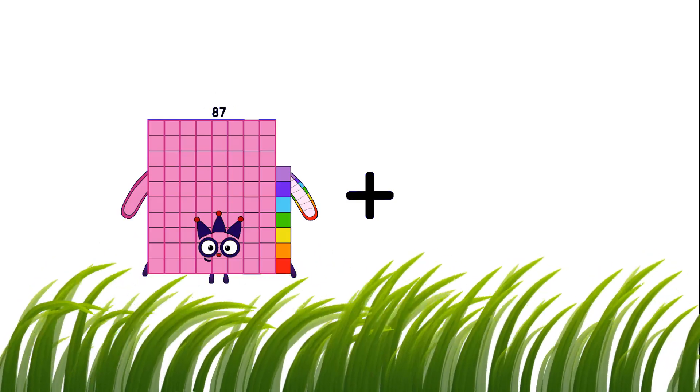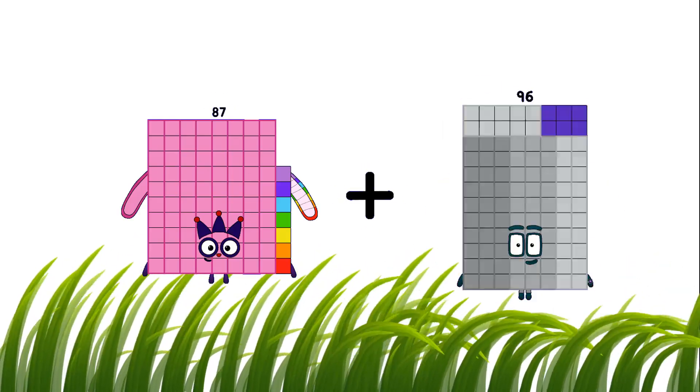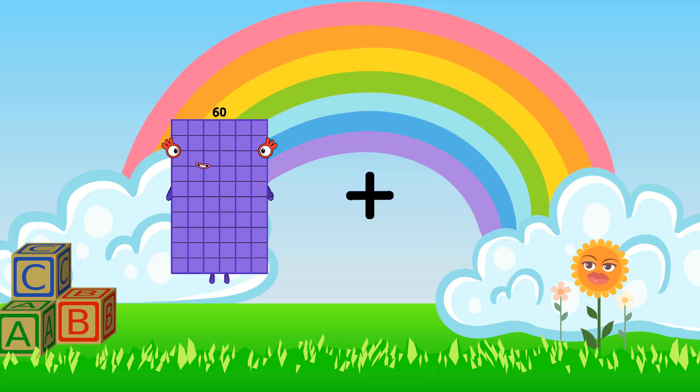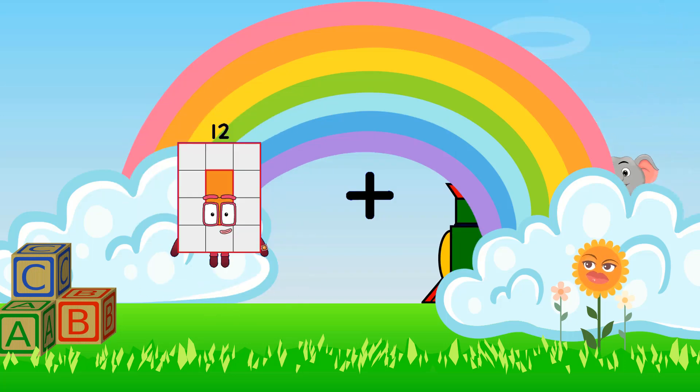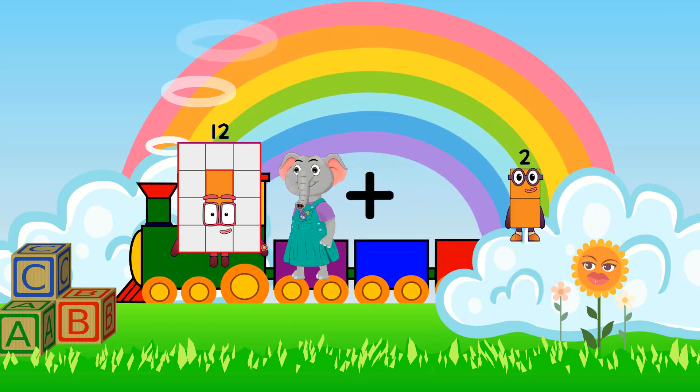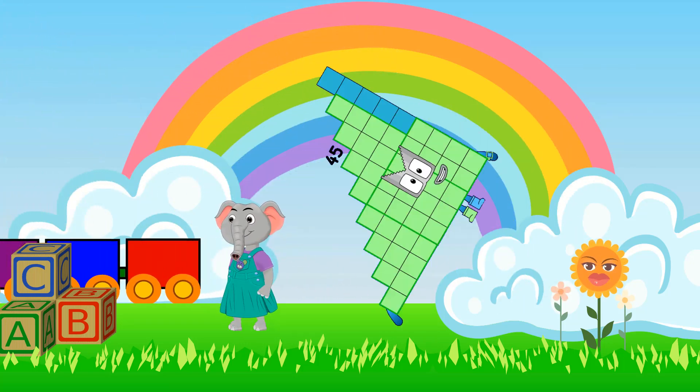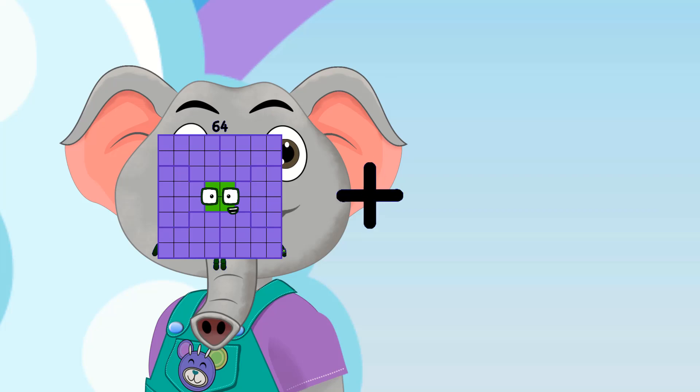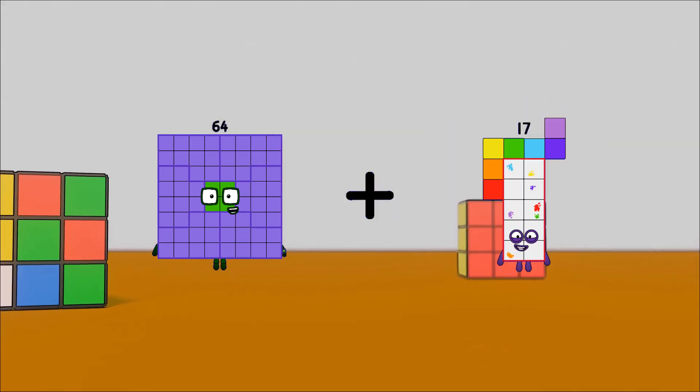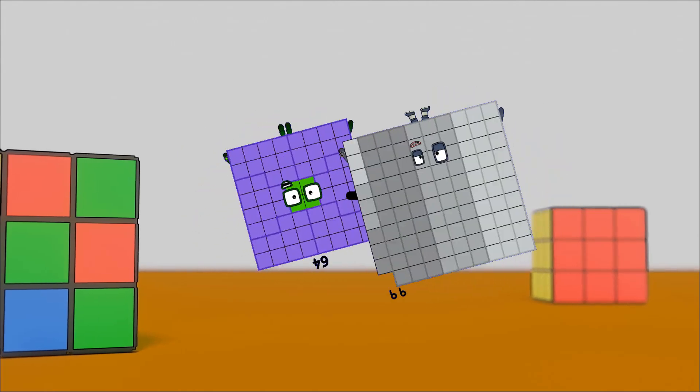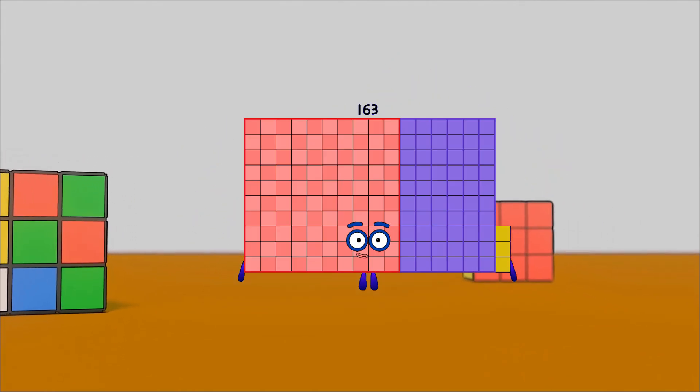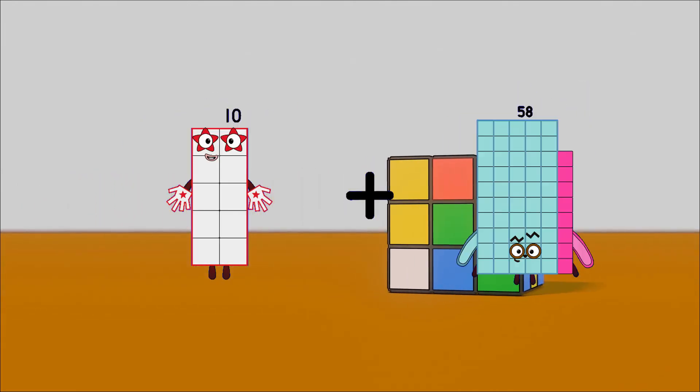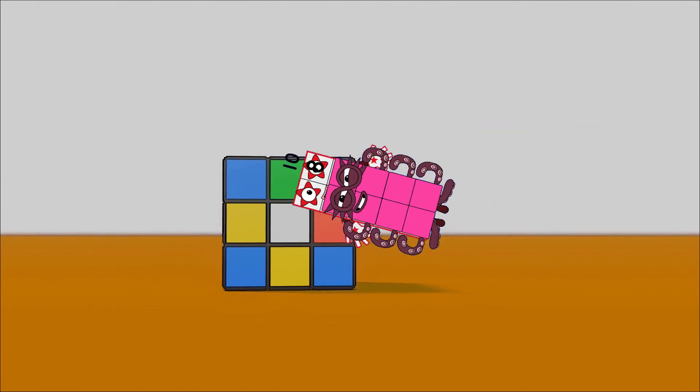87 plus 12 equals 99. 12 plus 33 equals 45. 64 plus 99 equals 163. 10 plus 8 equals 18.